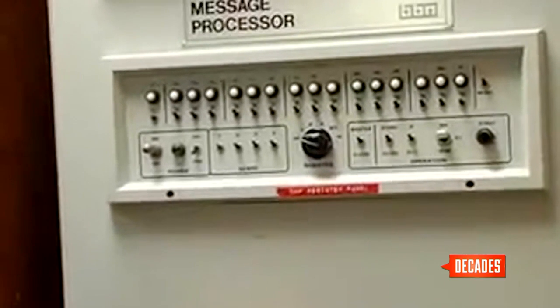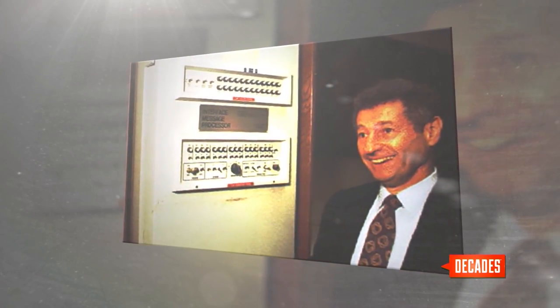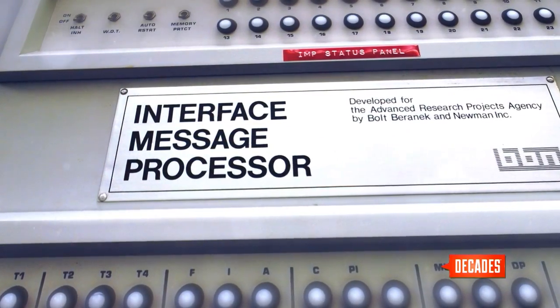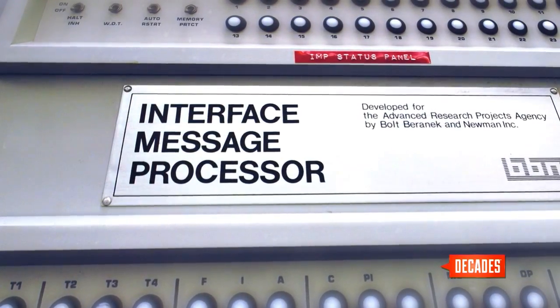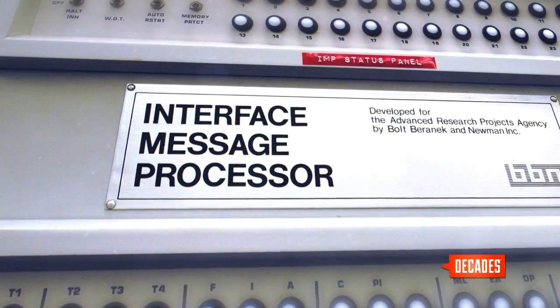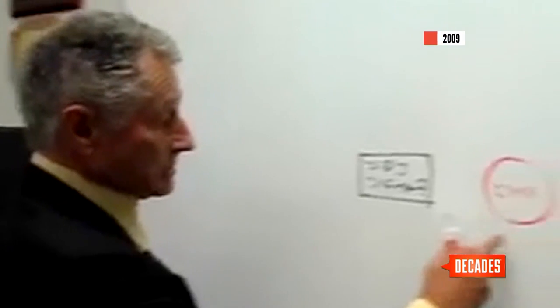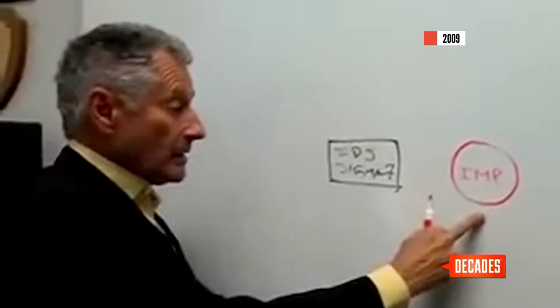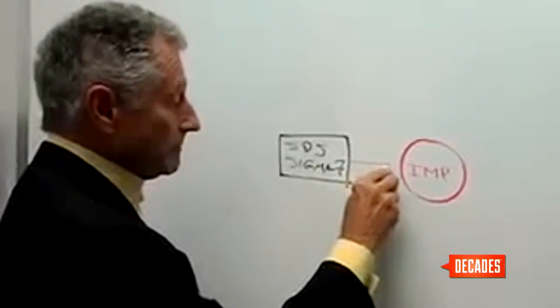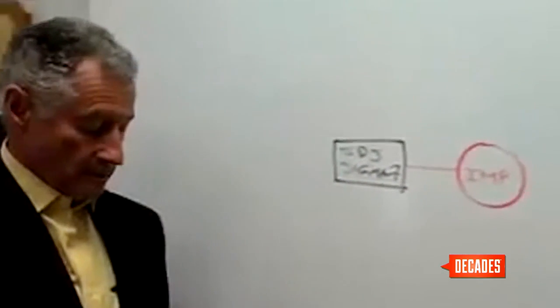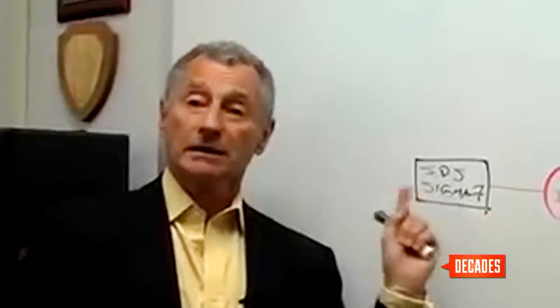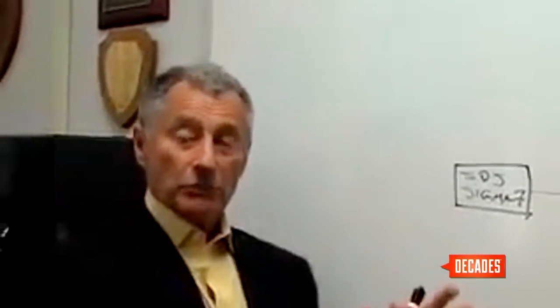On September 2nd, 1969, Kleinrock's team connected that processor to a host computer in his lab. For the first time, two computers were sharing information by exchanging data. Forty years later, Kleinrock recalled that event at UCLA: 'So on September 2nd, the day after Labor Day, we connected this switch to our Sigma-7, and bits began to flow immediately. Everybody was there that day, wondering, will it work? Everybody's ready to point the finger at each other if it didn't. Happily, it worked just fine.'